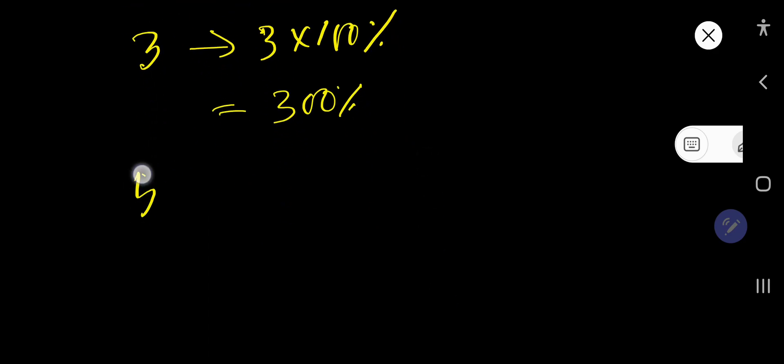And if I ask you to convert 5 as a percent, so you need to write 5 times 100 percent. That is 500 percent. So this is the way to convert a whole number to percent.